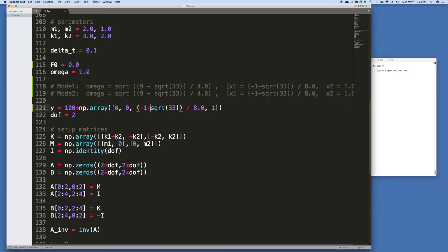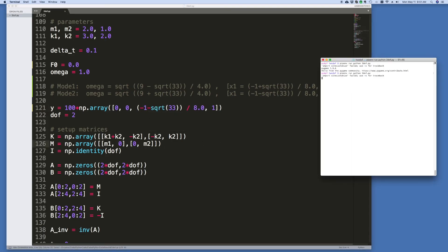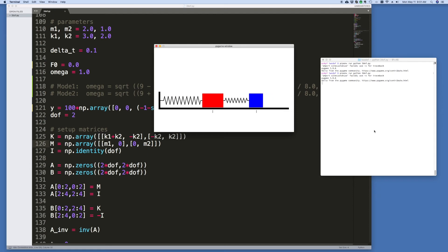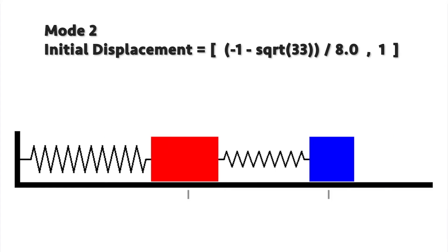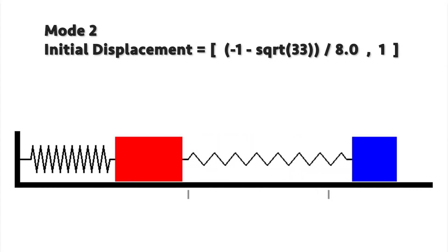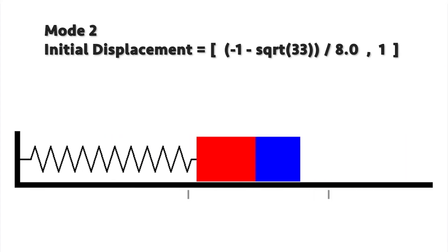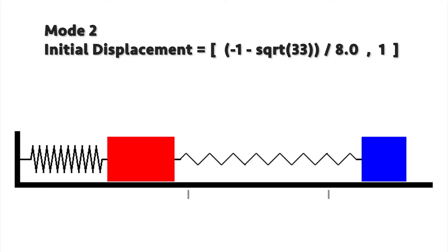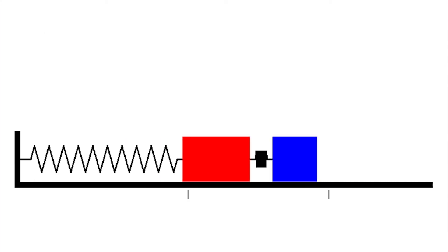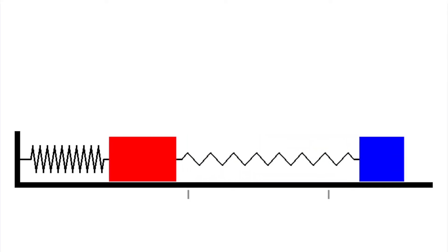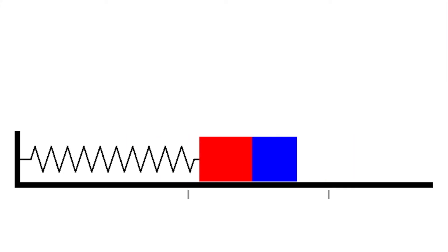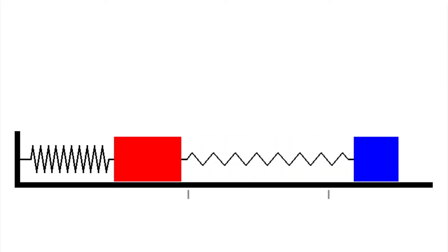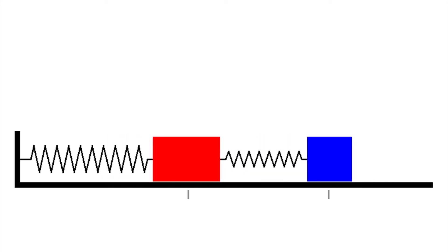By switching the sign to trigger mode 2, we stimulate the anti-symmetric mode where the masses move in different directions at the same time. Both masses still oscillate at exactly the same frequency and cross the equilibrium point simultaneously — but now at the higher frequency of approximately 1.9 rad/s.